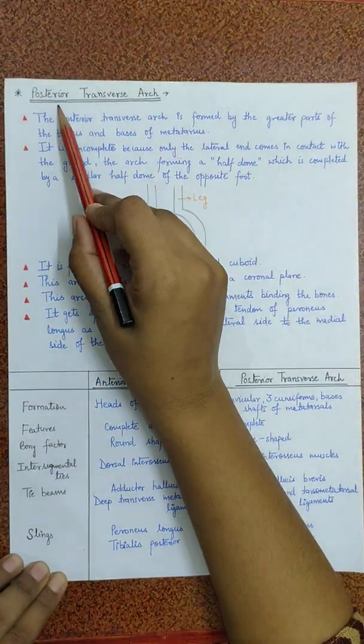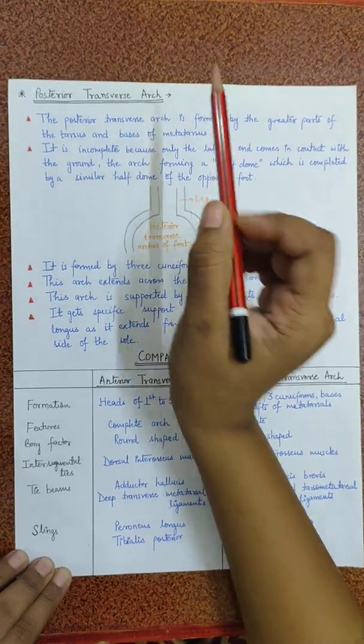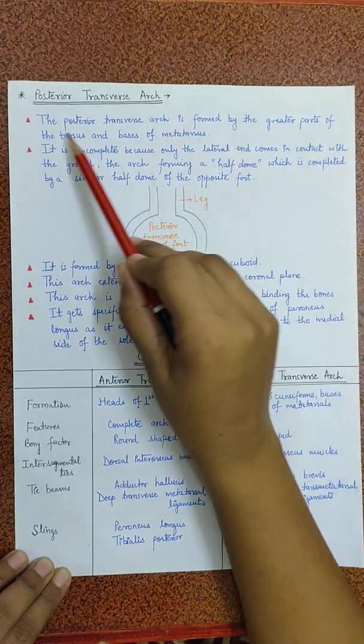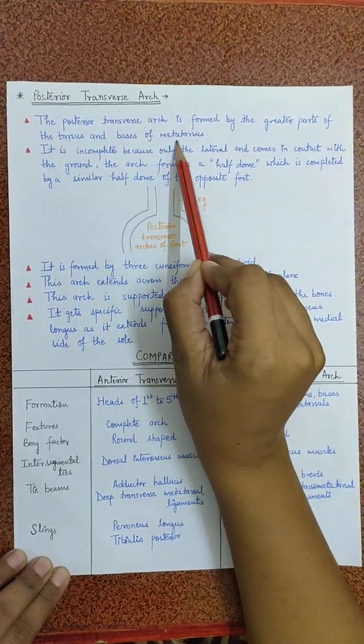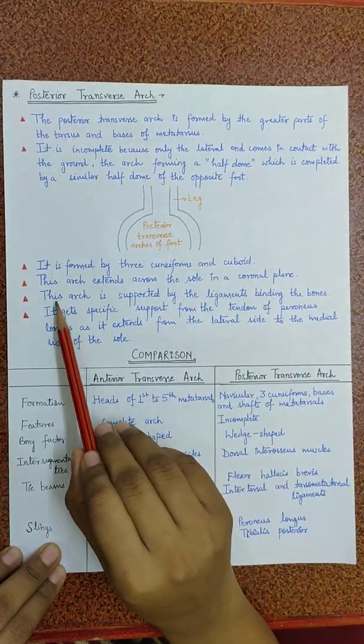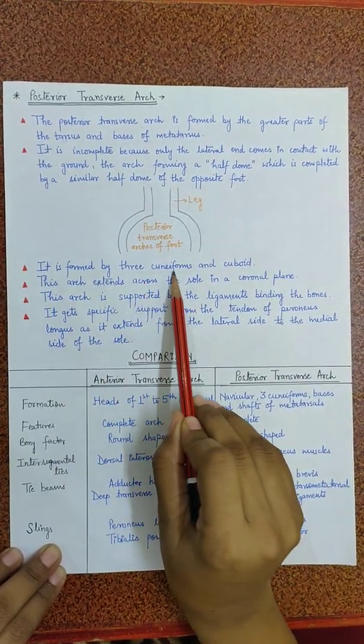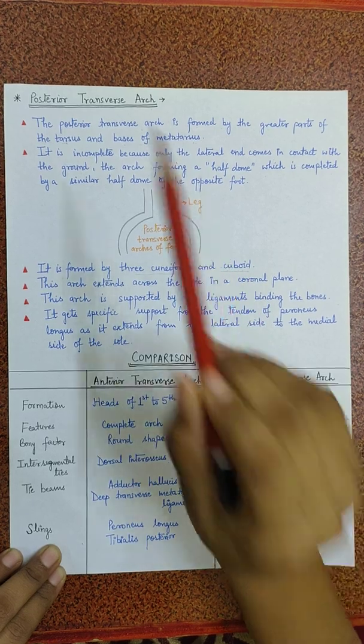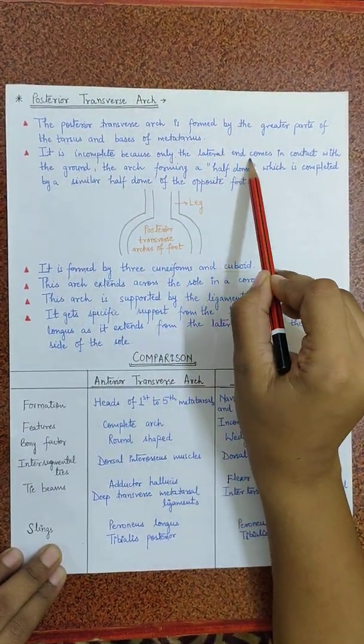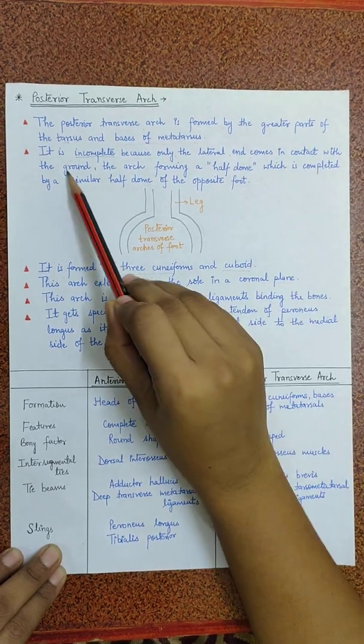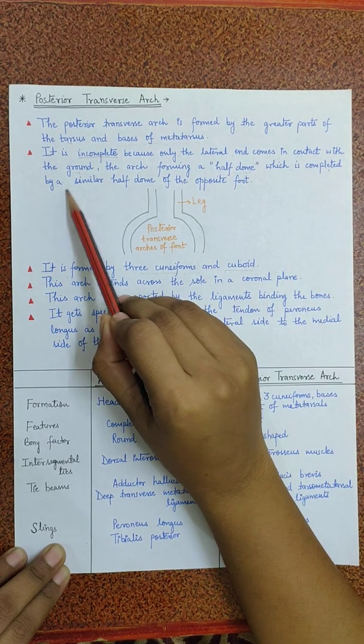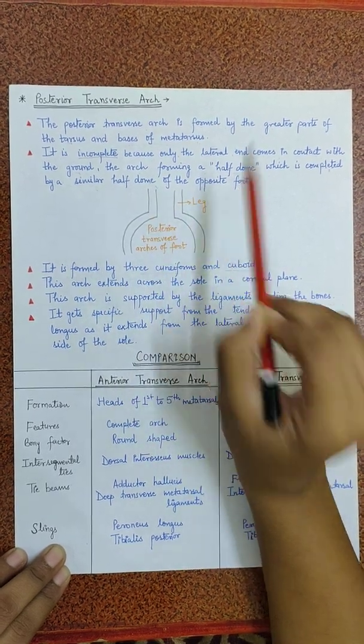Now we will see the posterior transverse arch. The posterior transverse arch is formed by the greater parts of the tarsus and the basis of metatarsus. Now here we can see this arch is formed by three cuniforms and the cuboid. This is an incomplete arch because only the lateral end comes in contact with the ground and the arch is forming a half dome and it is completed by a similar half dome of the opposite foot.